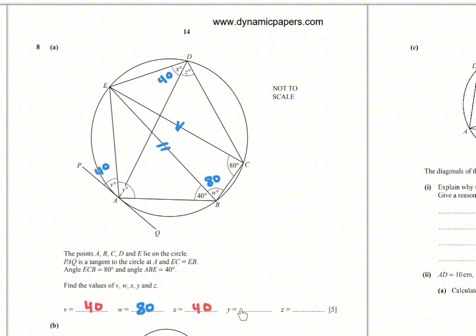Now for angle Y. We have circle ABCE. This is a cyclic quad. The opposite angles in the cyclic quad add up to 180. So Y plus 80 equals 180. 180 minus 80 equals 100. So Y equals 100.